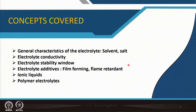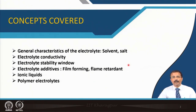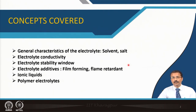First I will describe the general characteristics of the electrolyte including the salt and solvent that is used. The conductivity of the electrolyte at what range that is desired, what is the stability window that is fixed by the used anode and cathode material and the HOMO-LUMO band of the electrolyte in between. Then what kind of electrolyte additives are used basically to expedite the film formation or to impart flame retardants, and then ionic liquids whatever so far have been tried for sodium ion batteries and then what is the status of the polymer electrolytes.